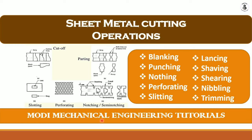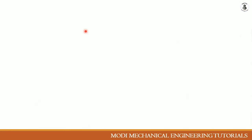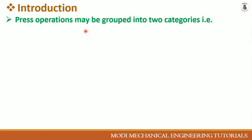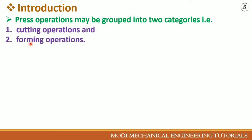Welcome to Modi Mechanical Engineering Tutorials. In this video, I would like to explain in detail about various kinds of sheet metal cutting operations. In sheet metal operations, press operations may be grouped into two categories: the first is cutting operations and the second is forming operations.